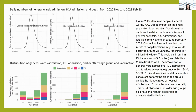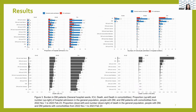This trend aligns with the older age groups also having the highest proportion of unvaccinated individuals. Importantly, we also found that the burden on diabetes patients was significantly higher, especially for those with comorbidities. This finding underscores the critical need for targeted healthcare strategies for these vulnerable populations.